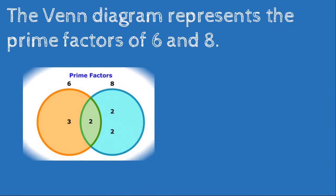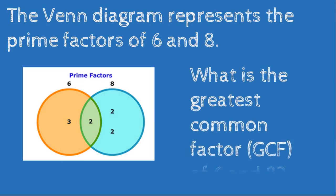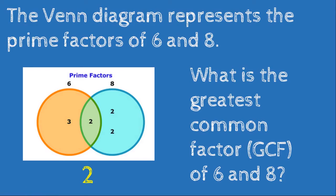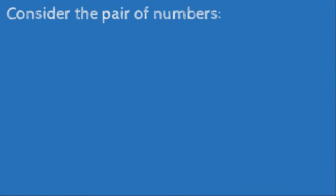We'll start with a Venn diagram that represents the prime factors of 6 and 8. The prime factors of 6 are 3 and 2; 3 falls in the orange circle under 6. Under 8 we can also see in the green area there's a 2, meaning 2 is shared by both 6 and 8. So the greatest common factor of 6 and 8 is 2.